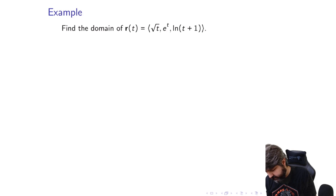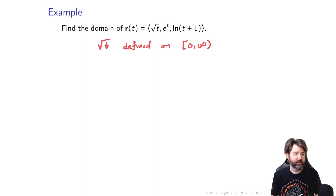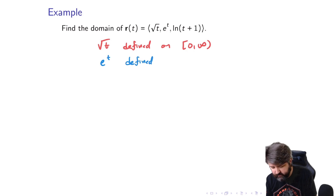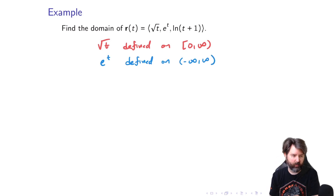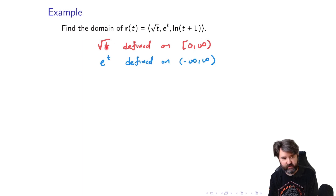Root T is defined on the closed interval from zero to infinity. E to the T is defined for all real numbers, so on the interval from negative infinity to infinity. We're looking at three separate components, so we have to pick the set on which all three of them are defined. These two would both be defined here, but there are numbers in the second interval for which root T is not defined.